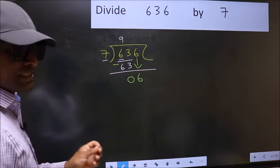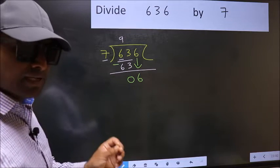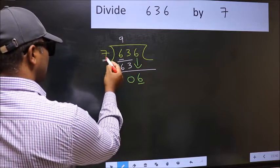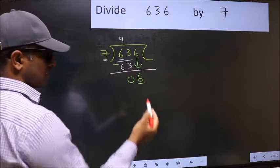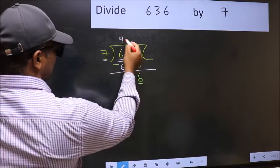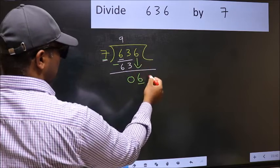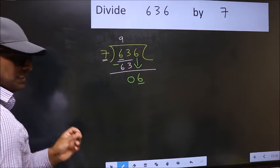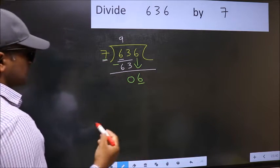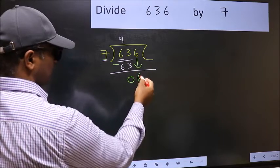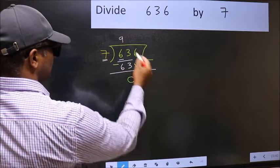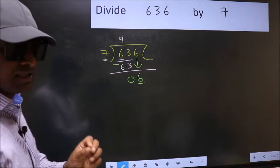After this step the mistake happens. And the mistake is this. Here we have 6 and here 7. 6 is smaller than 7. So what many do is they directly put dot and take 0. Which is wrong. Why is it wrong? Because just now you brought this number down. And in the same step you want to put dot and take 0. Which is wrong.